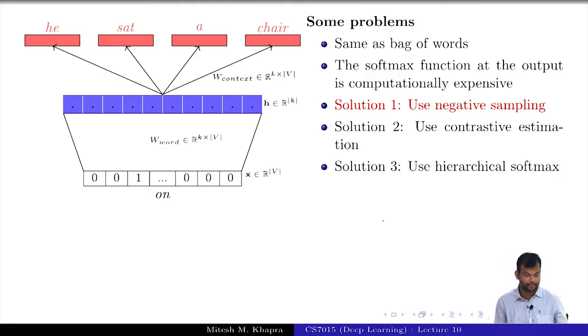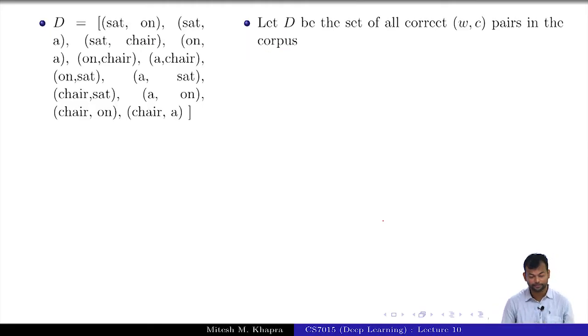First we will see use negative sampling because that is very easy. Let D be the set of all correct (w,c) pairs in the corpus. What do I mean by that? All words which actually appeared in the word comma context pair. You can look at the vector which I have constructed - sat, on, sat, chair. You can imagine that all of these appeared in the context of each other. This is my correct corpus as from what I got from my data.